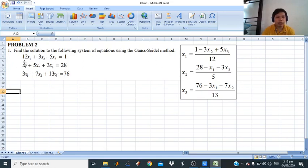This is our equation: 12x1 plus 3x2 minus 5x3 equals 1. Then we have x1 plus 5x2 plus 3x3 equals 28, and the third. So the first step of solution is